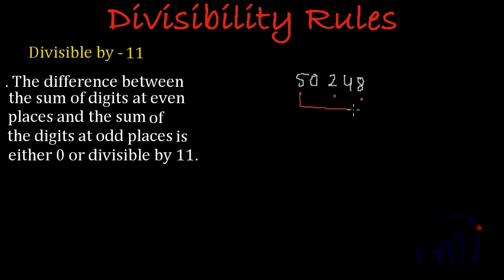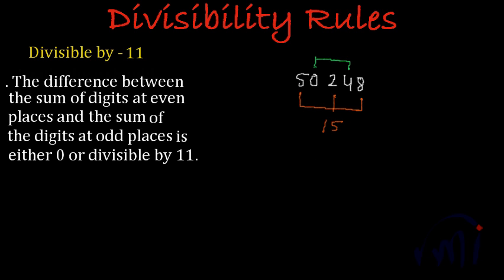We find the sum of all the digits at odd places and the sum of all the digits at even places, then find the difference — the difference should either be 0 or divisible by 11. The sum of the digits at odd places is 5 plus 2 is 7, and 7 plus 8 is 15. The sum of the digits at even places is 4 plus 0 is 4.